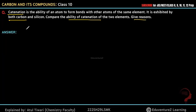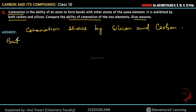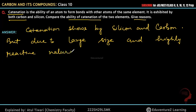So we can write catenation shown by silicon and carbon. Catenation shown by silicon, but due to large size and highly reactive nature of silicon, this affects the catenation.